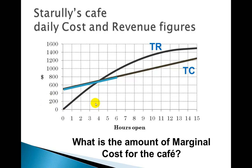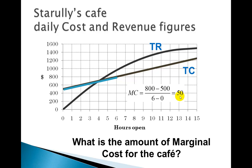I'm picking from zero to six — two good points: zero at $500 and six at $800. Just doing the change in cost over the change in time, that's basically $50 per hour. So my costs — the cost of milk, coffee, having my barista there — on average it's about $50 per hour. That's my marginal cost — how my cost is changing.